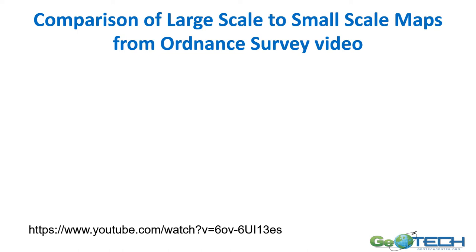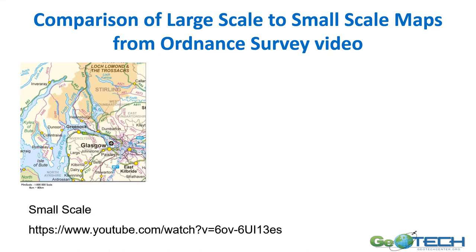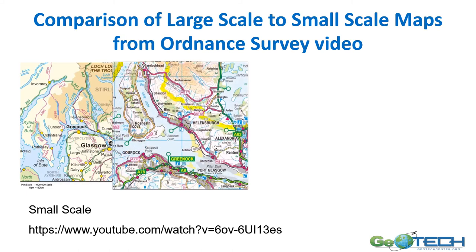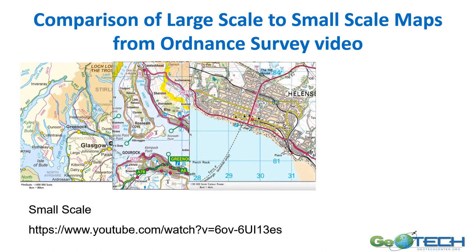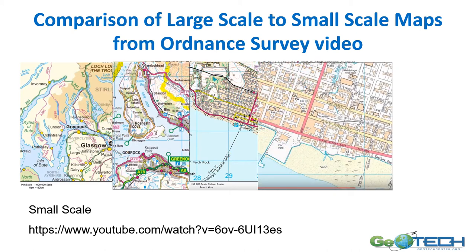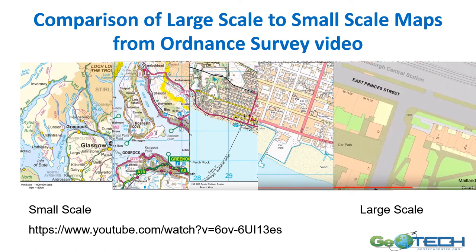This is a really interesting video from the Ordnance Survey — the link to the YouTube video is on the bottom of the slide. It compares large scale to small scale maps. Starting with a small scale map, cities are just dots with very little detail. As we move into medium scale, more and more detail appears, eventually showing a city with roads and streets. Continuing to increase to large scale shows finally very detailed large scale maps. This is a good way of thinking about small scale to large scale.